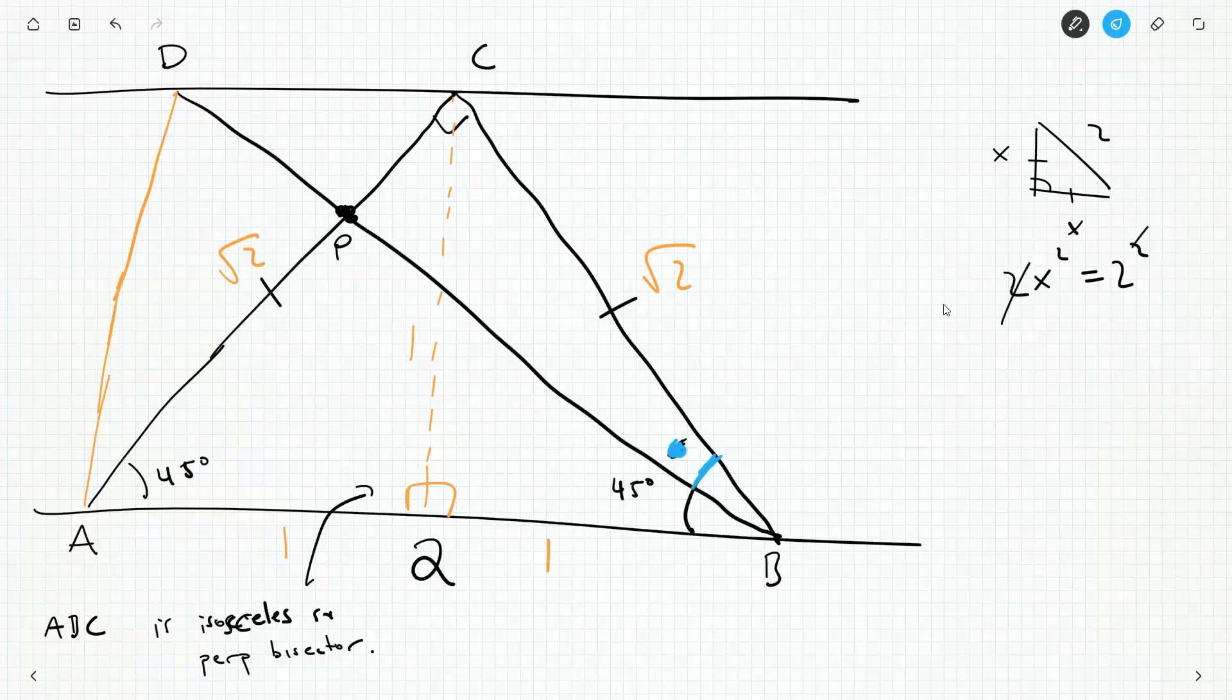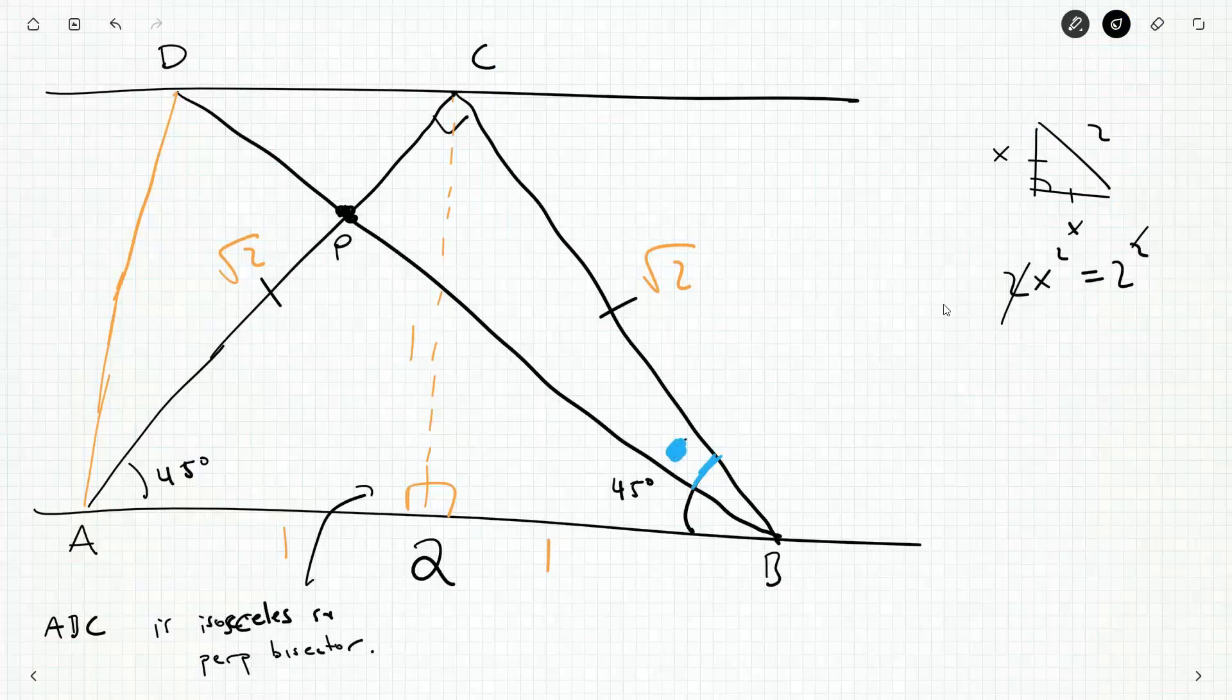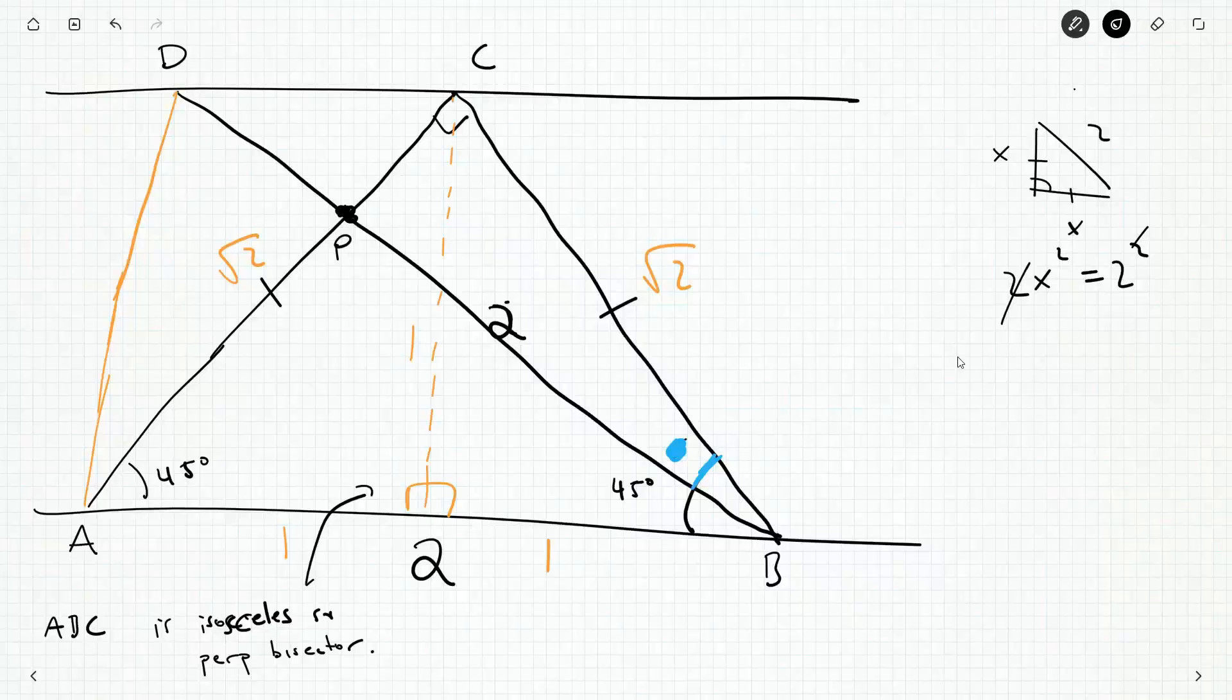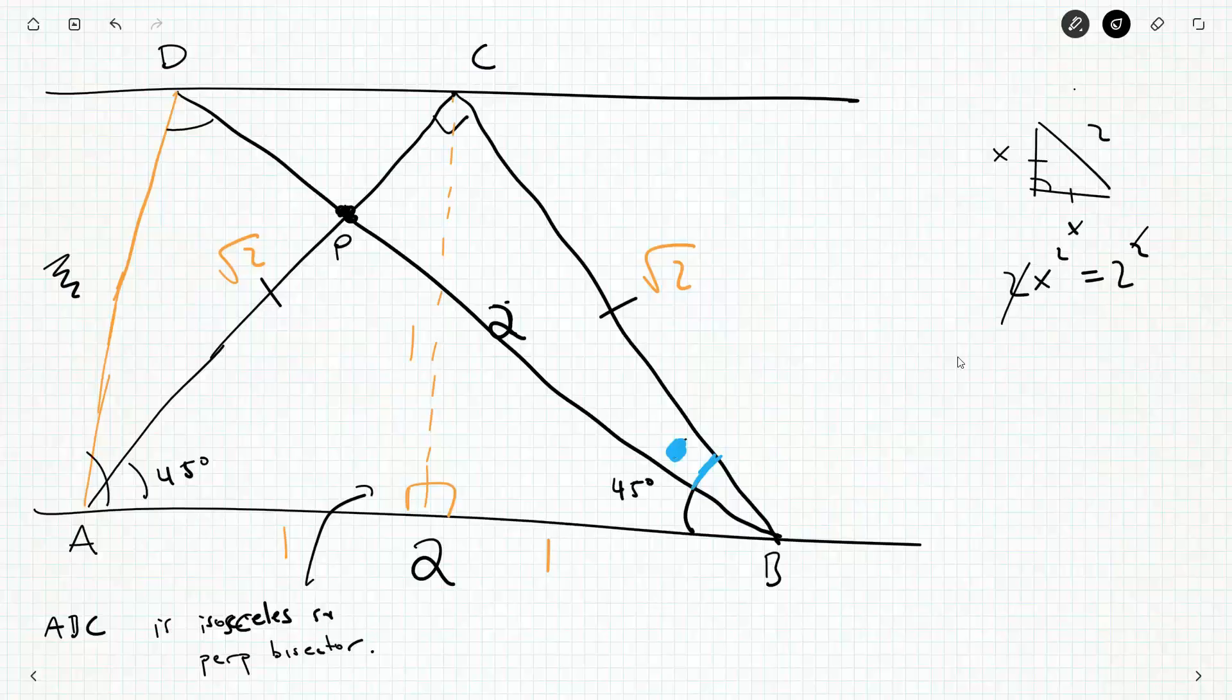Not only that, because it's isosceles, I can drop this perpendicular down and this is going to be one, this is going to be one. And more importantly, the distance between these two parallel lines is one and that might be important in some way. I haven't used the AD despite adding it in.